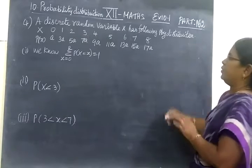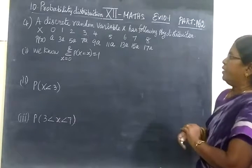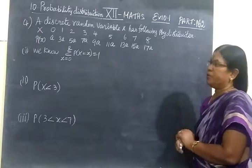Next we see part 162. A discrete random variable has the following probability distribution.